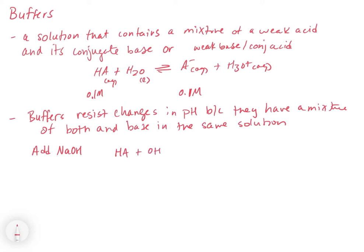If we're adding a base and we have acid present, our acid is HA. That HA is going to immediately react with that OH- and it's going to get rid of the strong base. The strong base is going to immediately react with the weak acid to be converted into A- and a little bit of water.